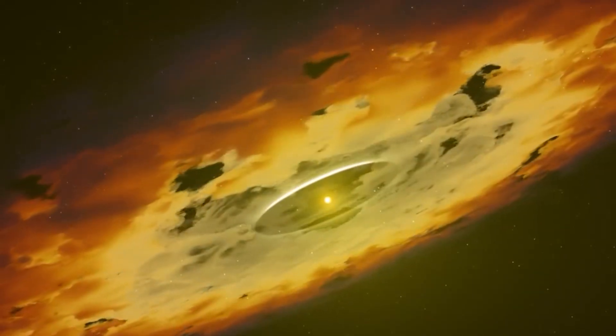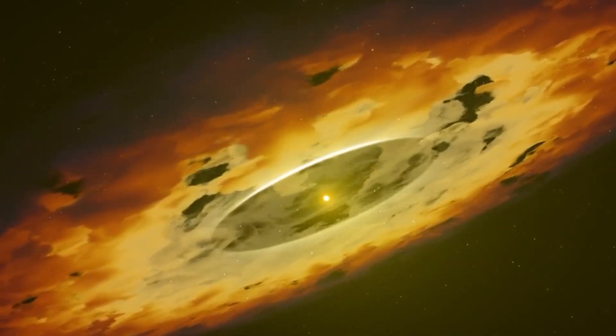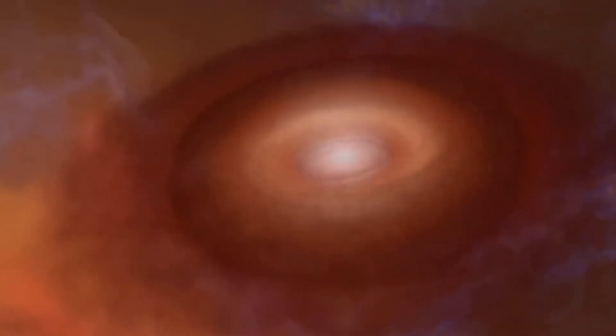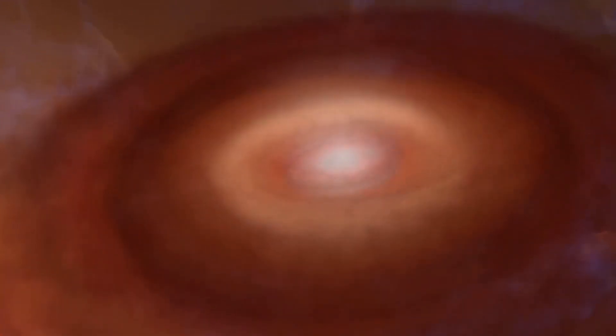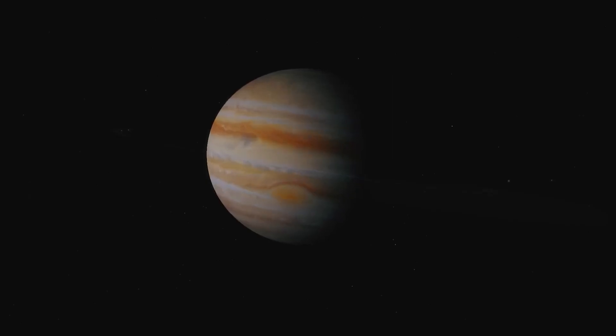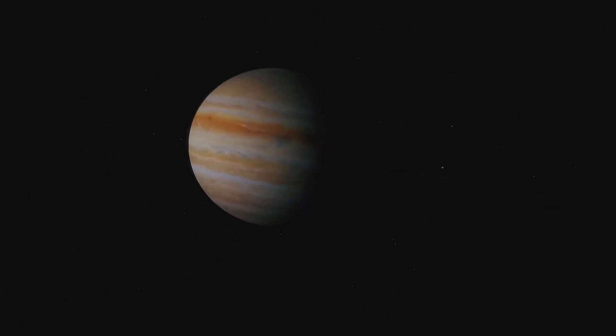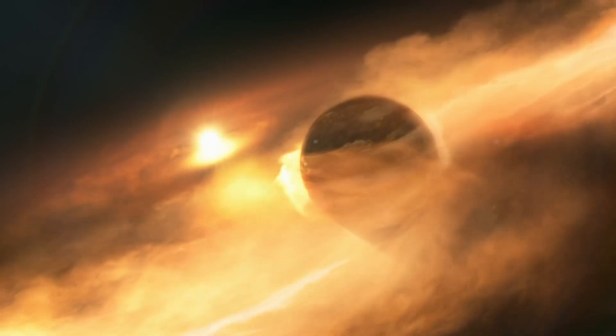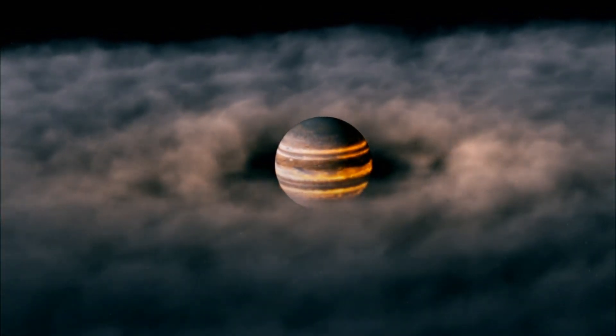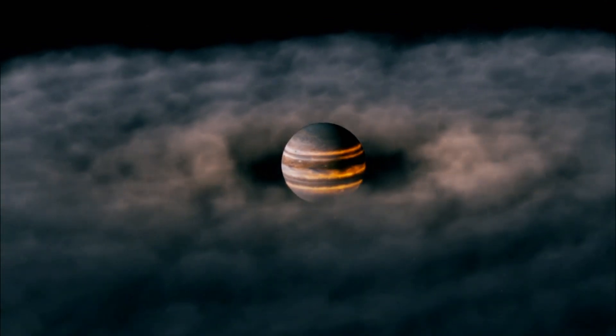However, in more distant areas from the star, the gas concentration quickly drops. Calculations and observations of other stellar systems suggest that a high gas concentration in the protoplanetary disk can be maintained for no more than 10 to 15 million years. Yet, according to calculations, forming a massive planet like Jupiter would require much more time, at least 100 million years. In other words, within the widely accepted model of planet formation, Jupiter simply wouldn't have had enough time to become so large.